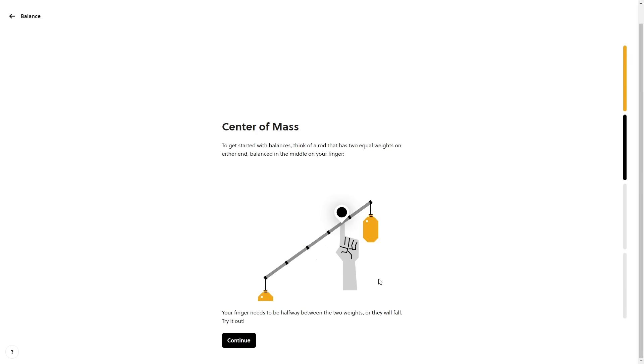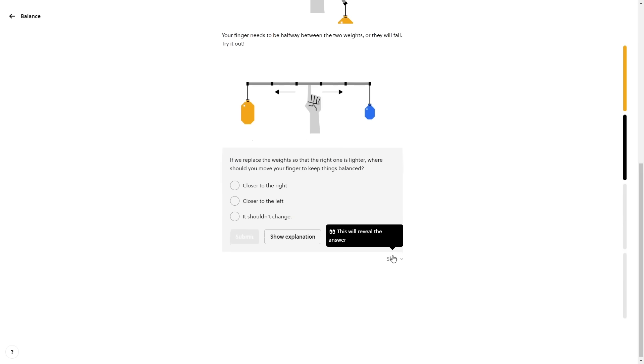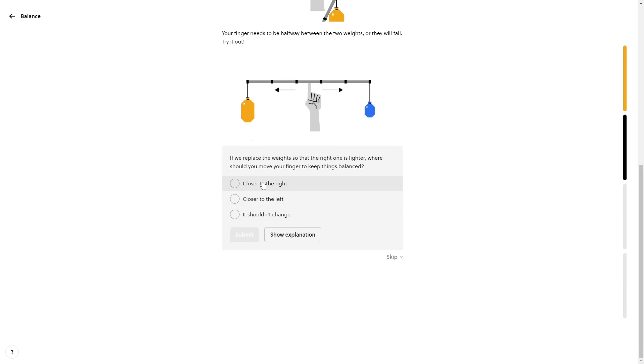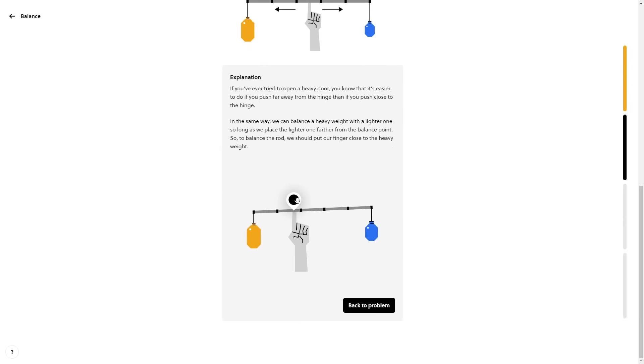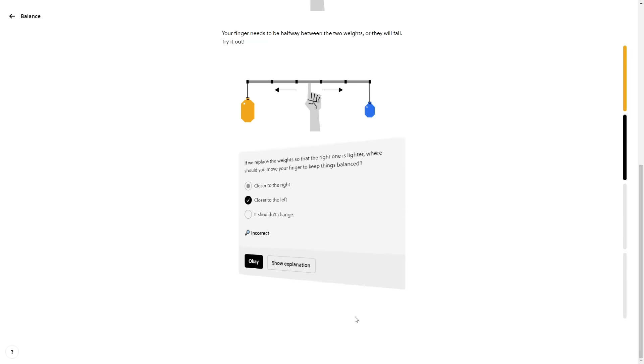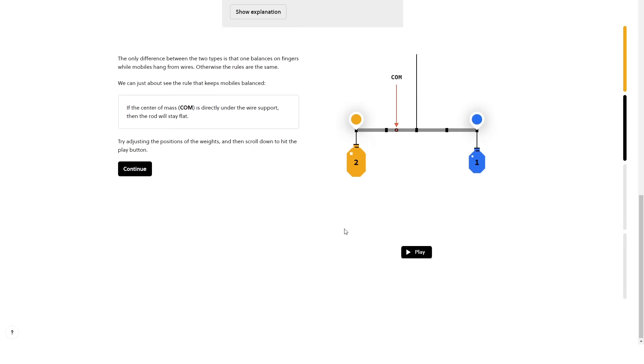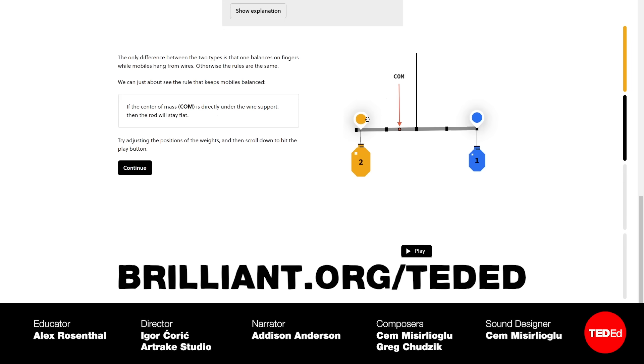If you love to tinker, invent, and experiment, Brilliant has a cool scientific thinking course you may be interested in. For instance, check out this lesson on the center of mass. In it, you're trying to balance mobiles. You can shift around the balance points and immediately see how the mobile balances or doesn't. This course features tons of interactive exercises that'll let you experience the principles of science firsthand. Visit brilliant.org slash TedEd to try it out, and the first 833 of you to use that link will receive 20% off the annual premium subscription fee.